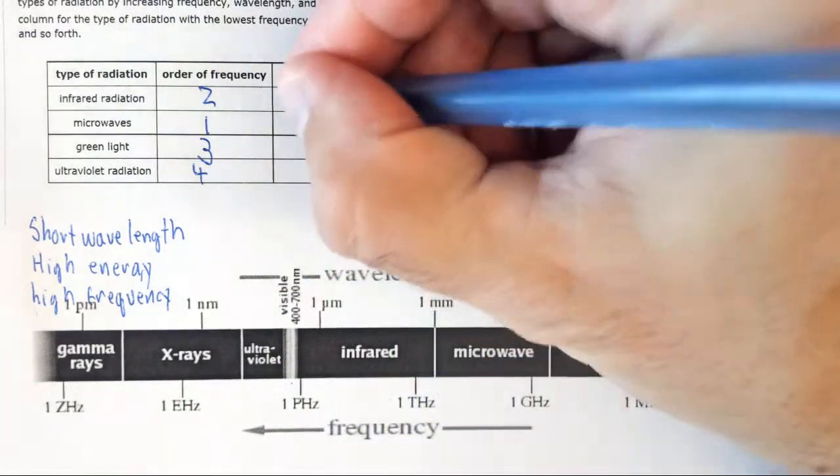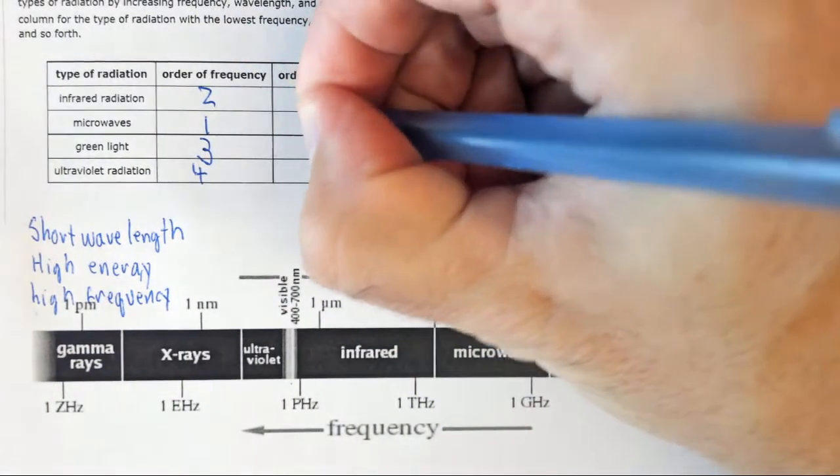Followed by infrared, which is three, and then finally microwaves, which is four.